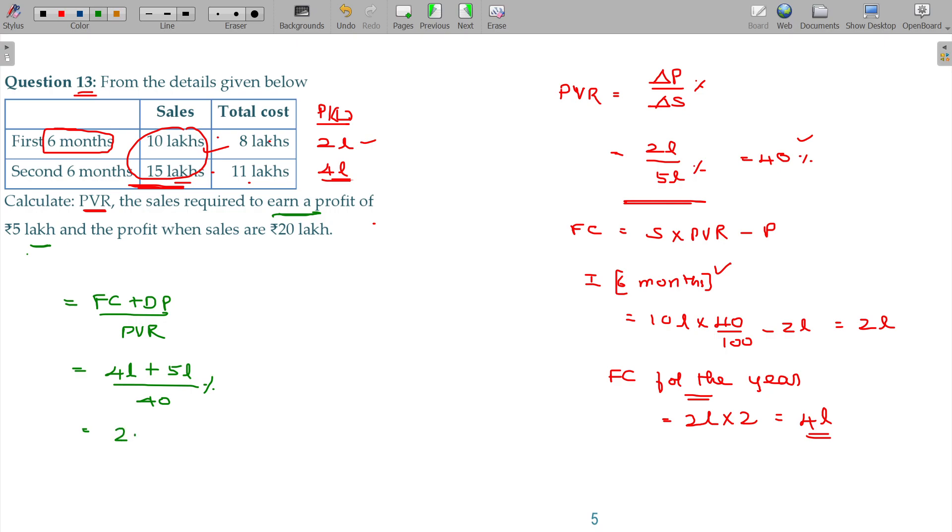And the profit when the sales are 20 lakhs. Profit equals sales into PVR minus fixed cost. Sales being 20 lakhs, PVR being 40 percentage, minus fixed cost here being 4 lakhs. So the answer being 4 lakhs.